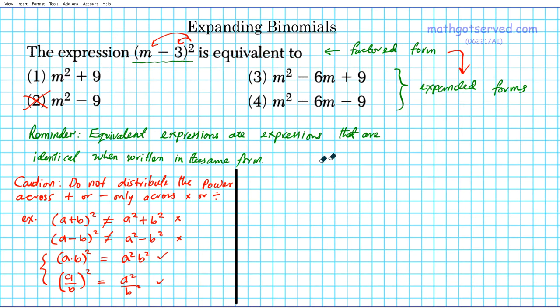So let's start with the foil method, which is pretty straightforward. So the goal here is we want to expand m minus three squared. So using the foil method, you might wonder how does this foil apply to this? m minus three squared just basically means that you're multiplying m minus three twice.